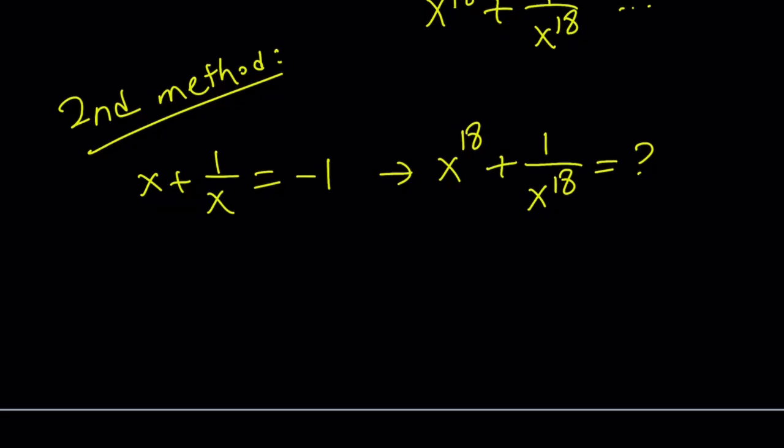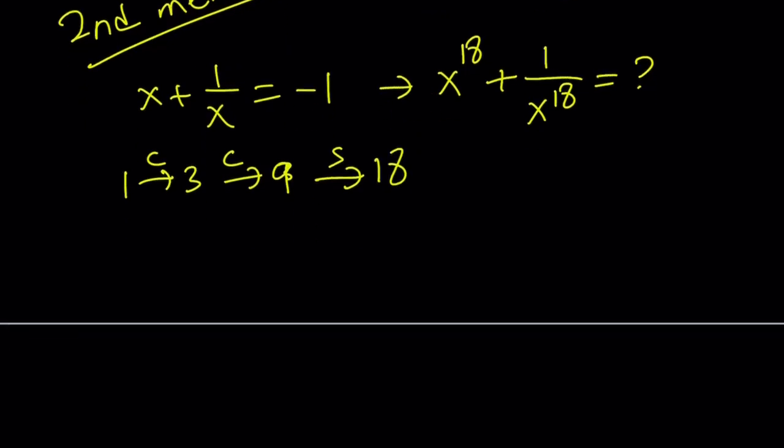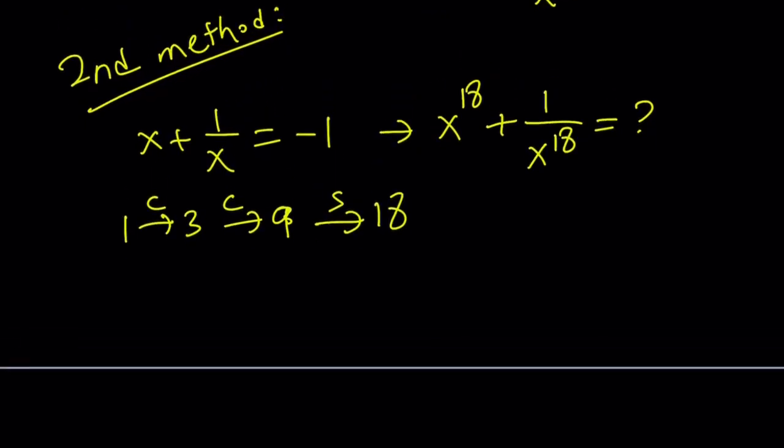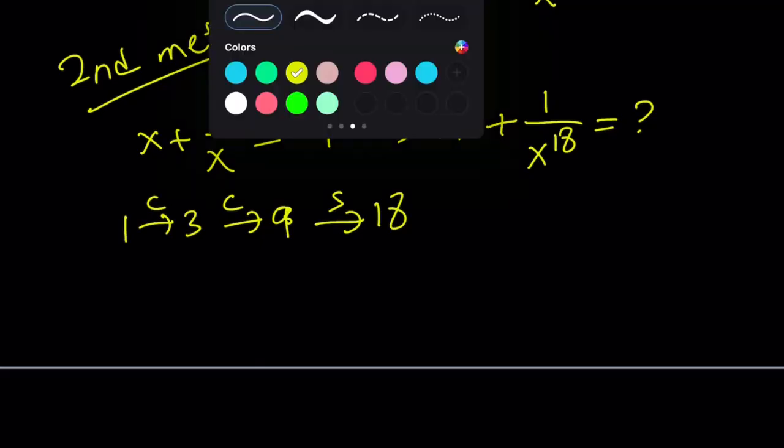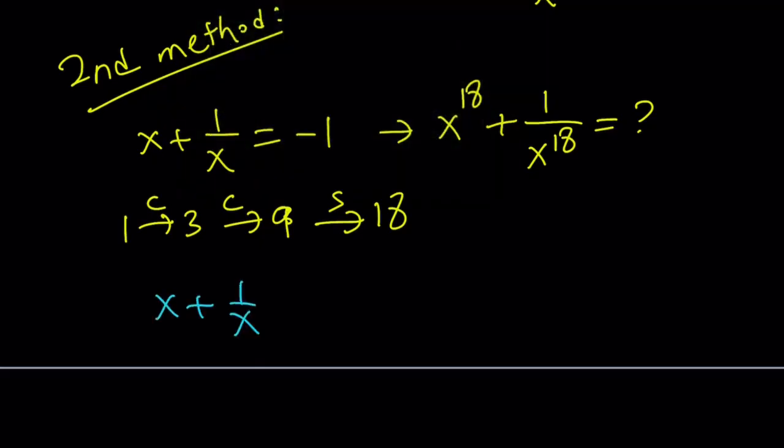I can cube this and get x cubed and 1 over x cubed. And then cube it again. And that's going to give me the 9th power. And then if I square the 9th power, that will give me the 18th power. Make sense? Yes, so start with the first power, cube it, get that 3, cube it again, get a 9, and then square. So this is like cube, cube, and then square. Those are the operations, basically. Make sense? Okay. And if they ask for the 17th power or 19th power, we would do things slightly differently. But it's the same idea.